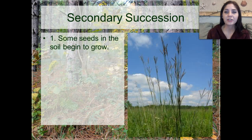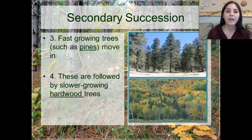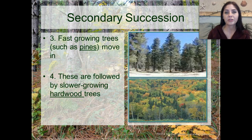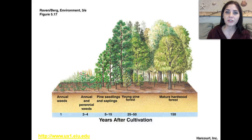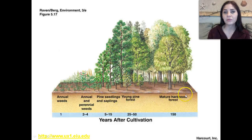In secondary succession, we start off with soil, and then some of the seeds in the soil begin to grow. The larger shrubs start to move in. Then we have our fast-growing trees such as pine trees, followed by much slower-growing hardwood trees such as maple, oak, and beech trees. Eventually you're going to have a climax community — starting with weeds and grasses, then smaller trees like the pine trees that grow much quicker than the hardwood trees, then a young pine forest, and eventually a mature hardwood forest which incorporates the pine trees into it as well.